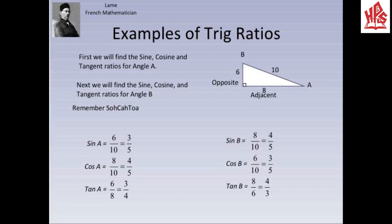Next, we will find the sine, cosine, and tangent ratios for angle B in a similar way. For angle B, AC is the opposite side and BC is the adjacent side.